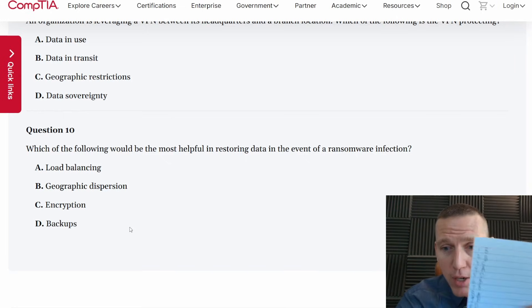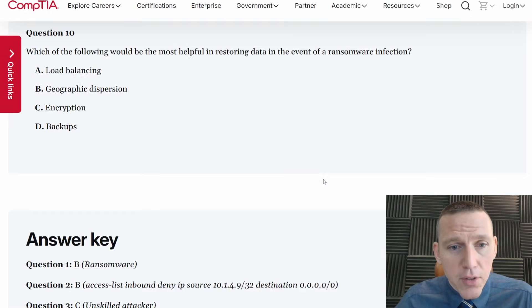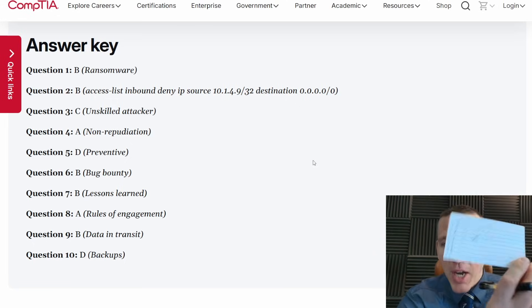So here's my note card. I think we're good. I think we got a hundred percent. I would be surprised if we didn't. Let's take a look at the answers. Answer key. B ransomware. Got it. 2B. Access list. Got that. 3C. Unskilled attacker. Very good. A. Non-repudiation. Excellent. D. Preventative. Very good. B. Bug bounty. B is for bug bounty. Know your cybersecurity ABCs. 7B. Lessons learned. A. Rules of engagement. B. Data in transit. And D. Backups. Yeah. Great. So a hundred percent. Great. Let me give myself a little star. So great job. Well done.